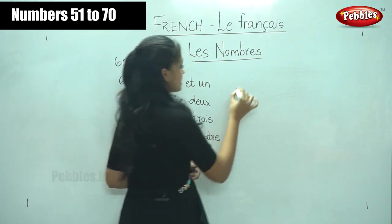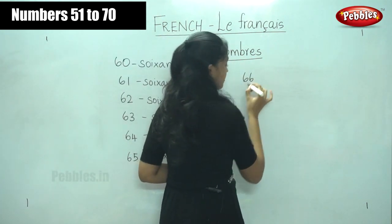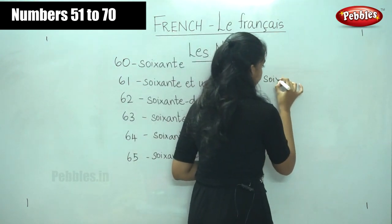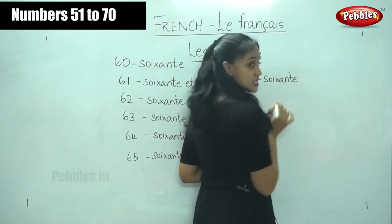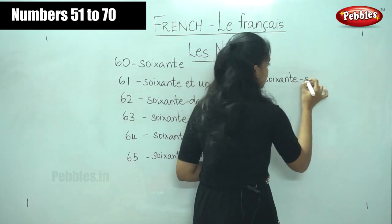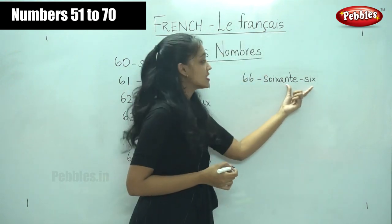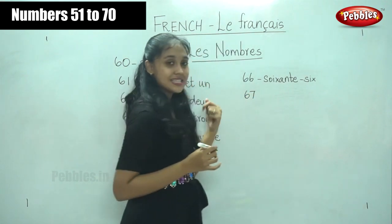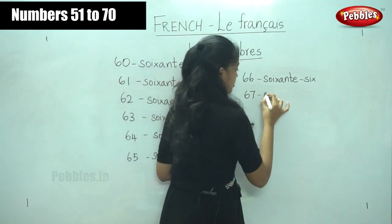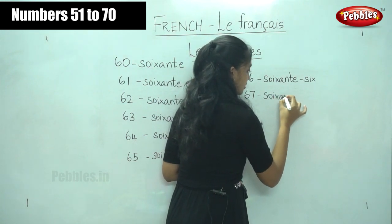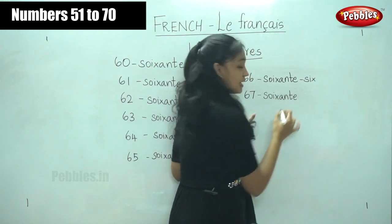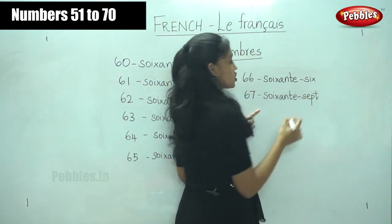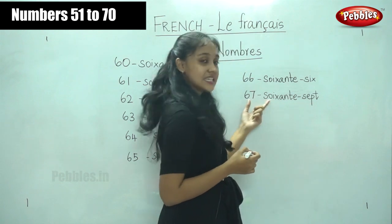So try writing number 66. What did we say for number 66? For 60 it is soixante, and for 6 it is six, so soixante six is 66. Now try writing number 67. For 67 it is soixante sept — 60 and 7 — soixante sept, sixty-seven.